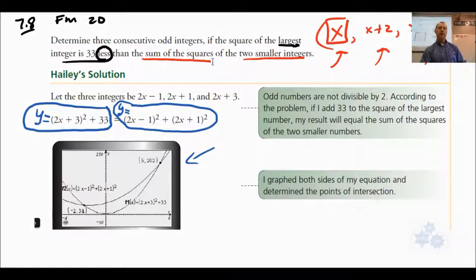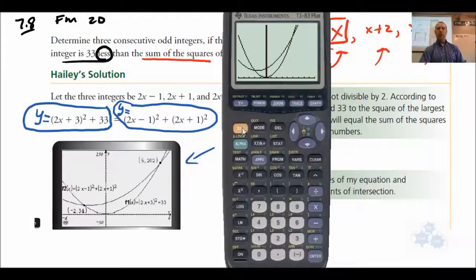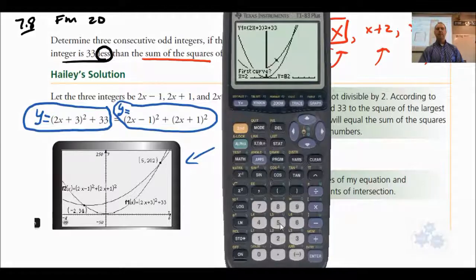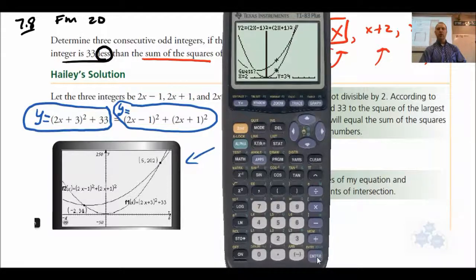Now that we have this, remember the intersection points would represent at least possible solutions. There may be some restrictions in the question. For example, if we find a solution down here and a solution over here, one of the solutions, negative 2, is going to be negative, and one looks like it might be positive. So if the question said they have to be just positive, you might have to reject one of those possible solutions. But we don't know for sure. Let's just make sure we can get this. For your calculator, second function trace, and you should remember this.